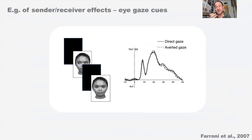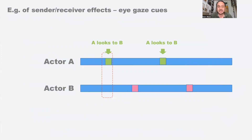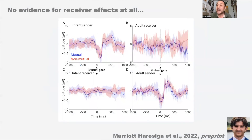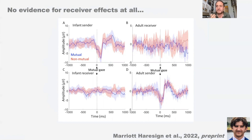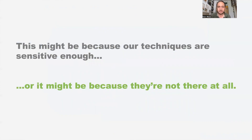We tried to look at this in a naturalistic, real-world setting — those moments where person A looks to person B — interested in how B's brain reacts, exactly replicating the paradigm that the screen-based study was simulating. A is the sender, B is the receiver. In fact, when we look at this in a real-world setting, we get no evidence in either the adult brain or the infant brain that when someone looks at us during an interaction our brain responds differently. That's a really important finding that's starting to question a lot of these earlier results — it might be that our techniques aren't sensitive enough, or it might be that the effect isn't there at all.